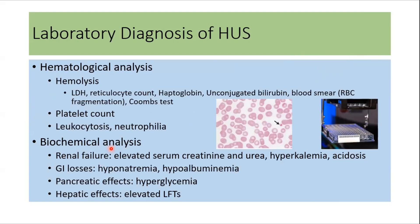For the lab diagnosis of HUS, various tests can be performed. Hematological analysis includes looking for features of hemolysis like LDH, reticulocyte count, haptoglobin, unconjugated bilirubin, and blood smear for schistocytes. Coombs test can also be done. Platelet count is usually decreased. The patient can present with leukocytosis or neutrophilia, which is associated with a poor prognosis.